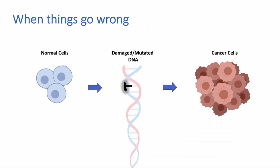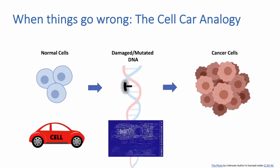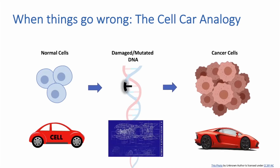What happens when things go wrong in a cell? Normal cells can have damaged or mutated DNA, and as a result, they can transform into cancer cells. I will use a car analogy that many groups use to help describe what tumor suppressors and oncogenes are. You can think of the normal cell as a properly working car. A car has blueprints that make up its different components or parts — you can think of these blueprints as genes. The different parts of the car or cell can help slow down or accelerate the car as it drives down the road of life. But when things go wrong affecting the different parts of the car, a normal car can transform into a speed racer, or a normal cell can transform into a rapidly proliferating cancer cell.